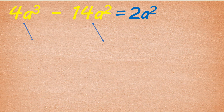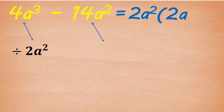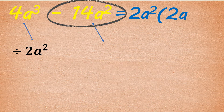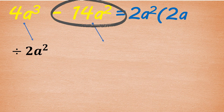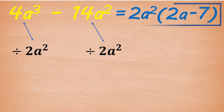Divide the polynomial by the common factor 2a squared to get the remaining factor. 4a cubed divided by 2a squared gives us 2a. In dividing variables, we just subtract their exponents: 3 minus 2 is 1, so variable a will have 1 as its exponent, which we do not write. Negative 14a squared divided by 2a squared is 7. The remaining factor is 2a minus 7. Therefore, the factors of 4a cubed minus 14a squared are 2a squared and 2a minus 7.